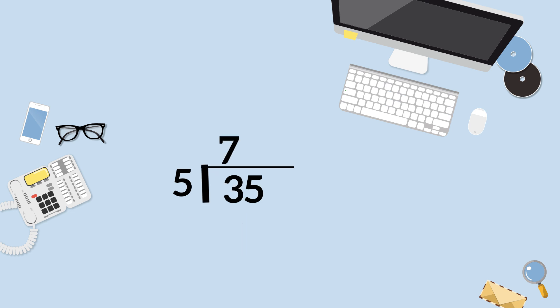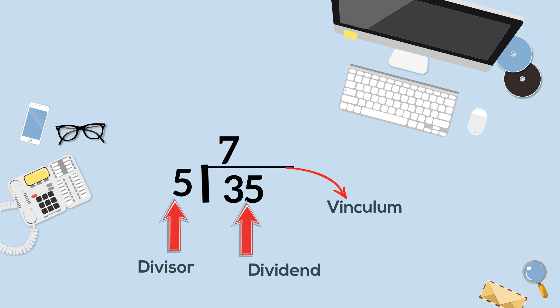Next, it may take a little bit different form. The 35 is the dividend and it's inside the brackets. The 5 is on the outside and the quotient would be found on top.